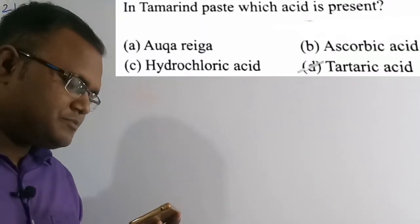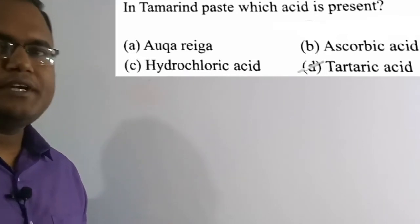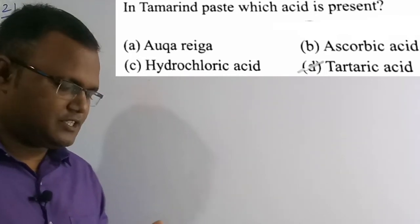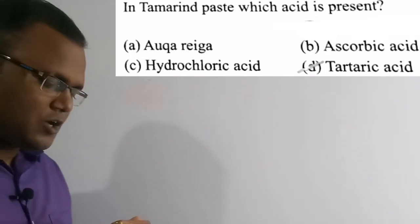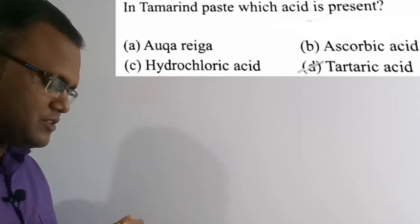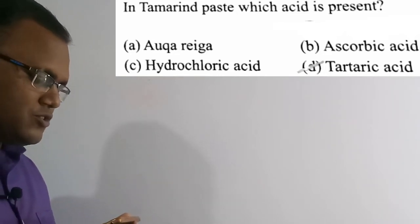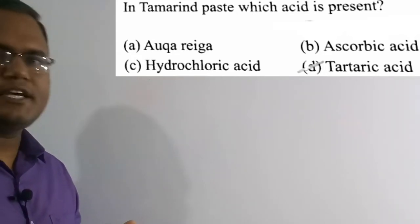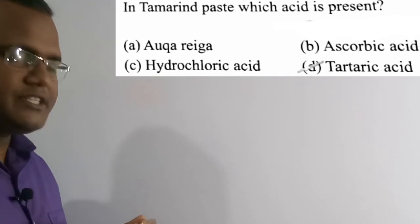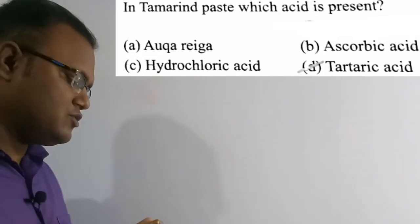Now we are going to solve the 21st question. In tamarind paste, which acid is present? Option A: aqua regia. Option B: ascorbic acid. Option C: hydrochloric acid. Option D: tartaric acid. The correct answer is option D — tartaric acid.